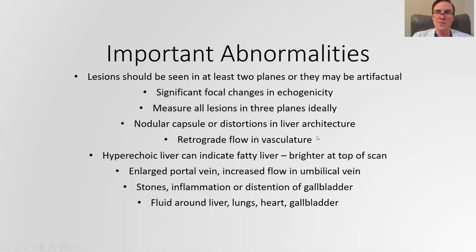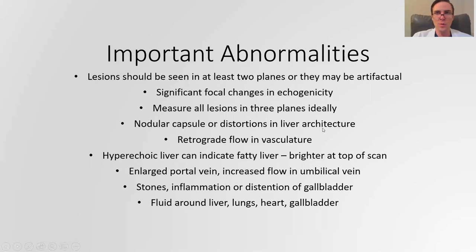With the vasculature, you want to see if there's any flow that's different than expected — sometimes you have retrograde flow where blood is going in the opposite direction, which is an important finding to characterize further with spectral Doppler. A hyperechoic liver can indicate fatty liver. An enlarged portal vein can indicate portal hypertension, and you can also see increased collateral flow — for example, a lot of flow through the umbilical vein is an indication of significant portal hypertension. You're also looking for stones, inflammation, or distension of the gallbladder, and of course any fluid or effusions that shouldn't be there, whether in the lungs, heart, gallbladder, or around the liver itself — all of those places can develop effusions you might catch incidentally on liver ultrasound.